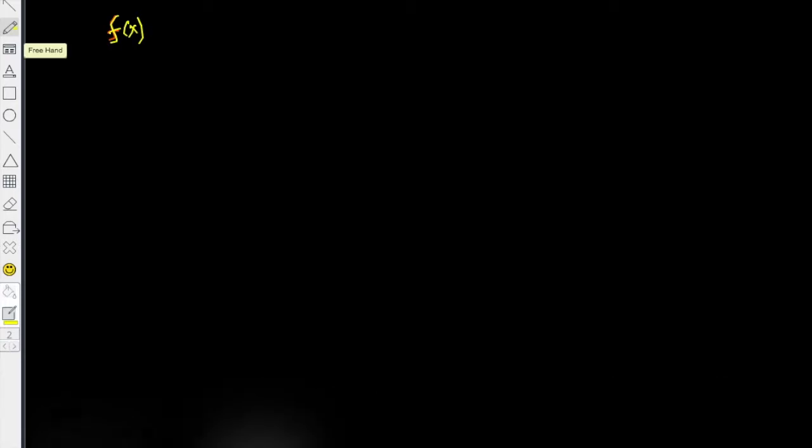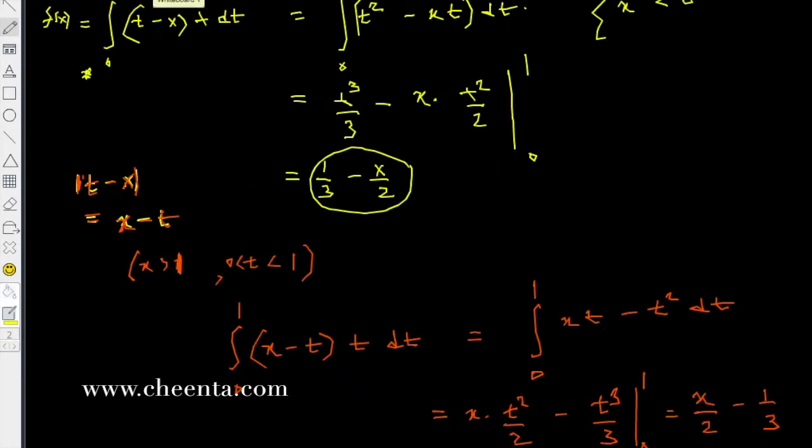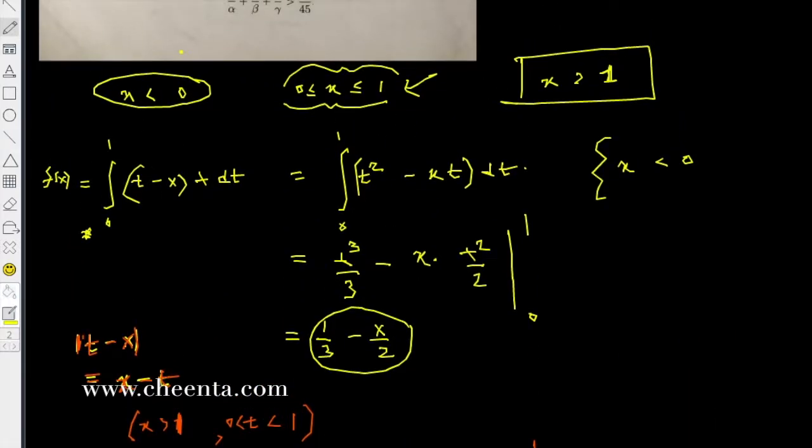So f of x is equal to one-third minus x by 2 when x is less than 0, and x by 2 minus one-third when x is greater than 1. We have to be careful about the interim situation, the case where x is between 0 and 1.